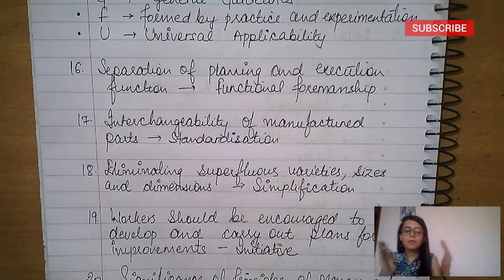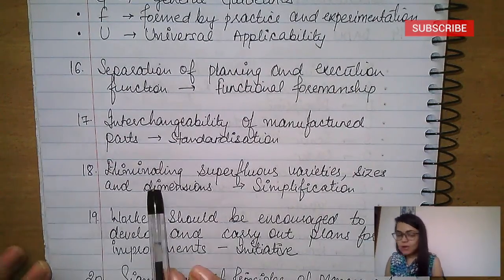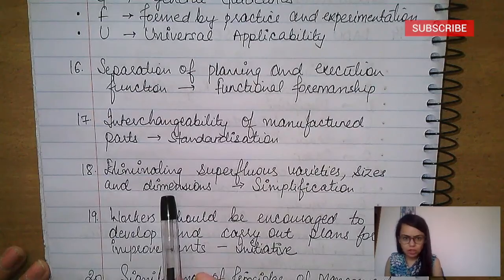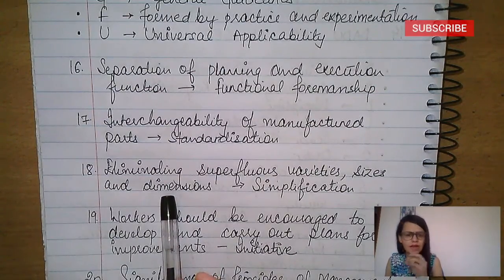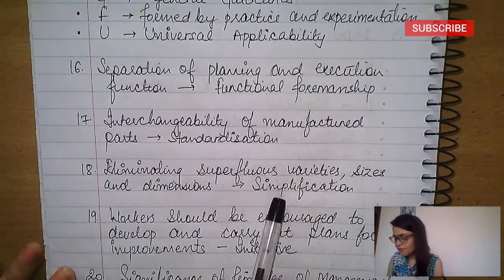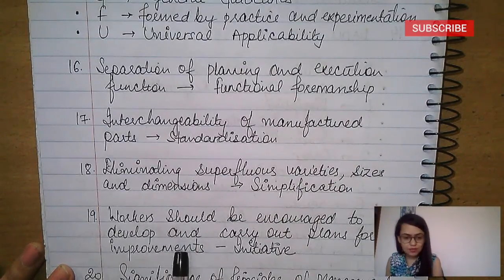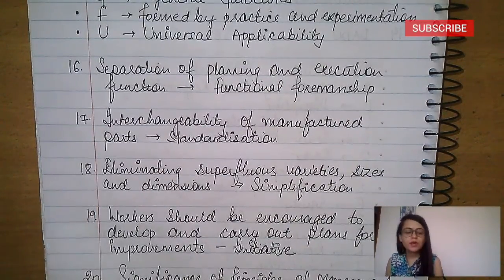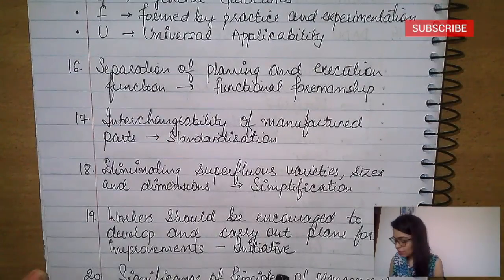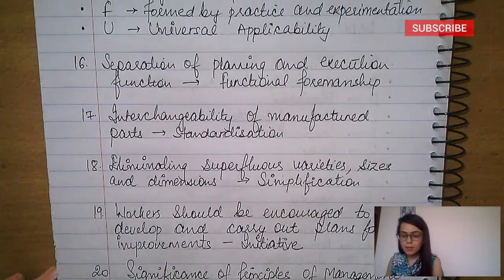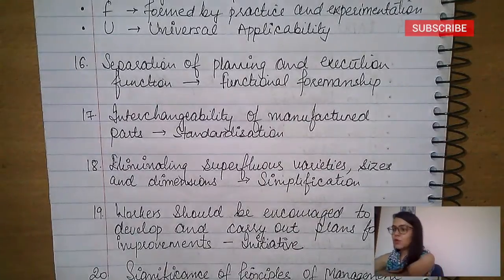Eliminating superfluous variety, sizes, and dimensions — unnecessary varieties do not need to be kept. That is simplification. Workers should be encouraged to develop and carry out plans for improvements — that is initiative.